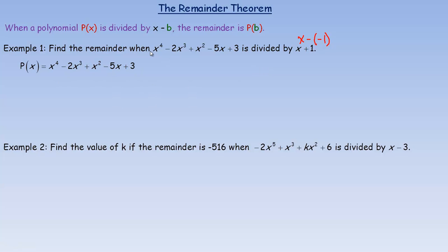Here's our polynomial: p(x) = x⁴ minus 2x³ plus x² minus 5x plus 3. We substitute negative 1 in place of x. That's the calculation to find the remainder when we're dividing by x plus 1.